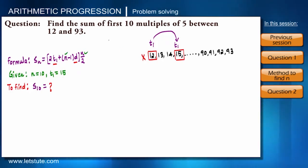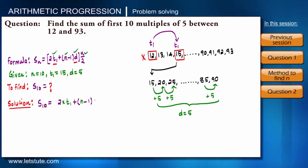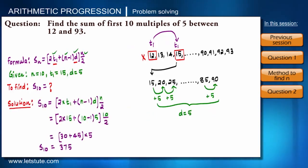What is the common difference? Common difference will be of 5, because the multiples of 5 between 12 and 93 will be something like 15, 20, 25 to 85 and 90. So we got D equals 5. Put all the values and total sum becomes S10 equals 375. That means the first 10 multiples of 5 between the range 12 and 93 is 375.